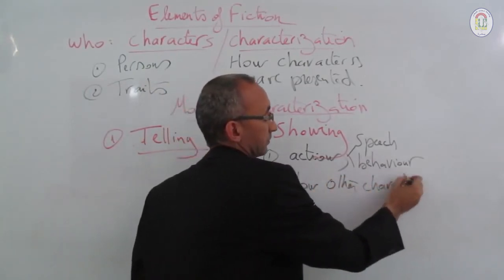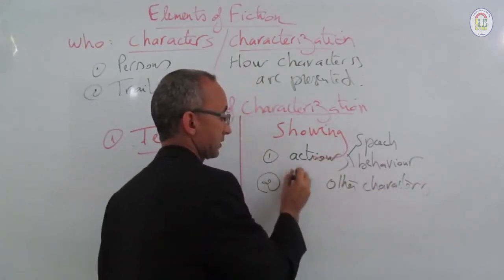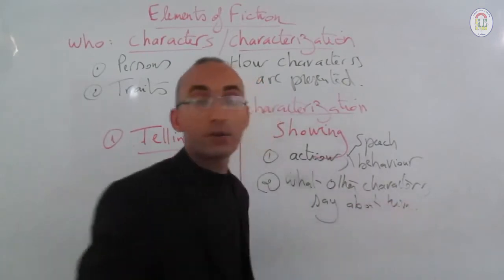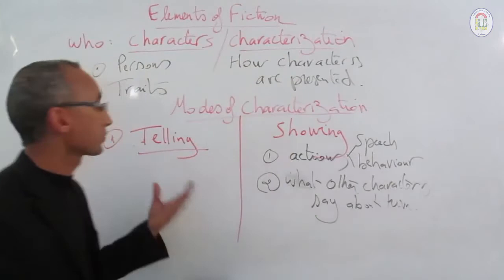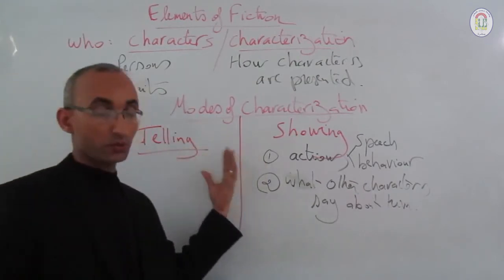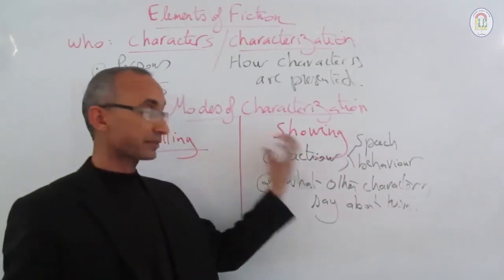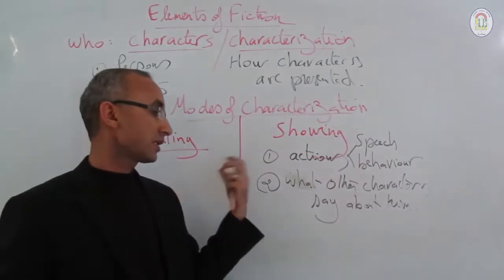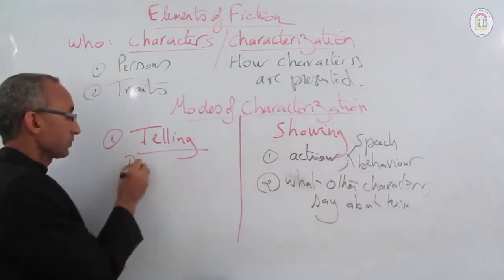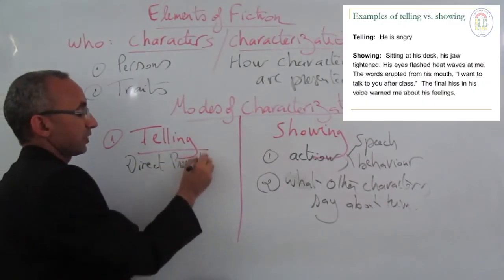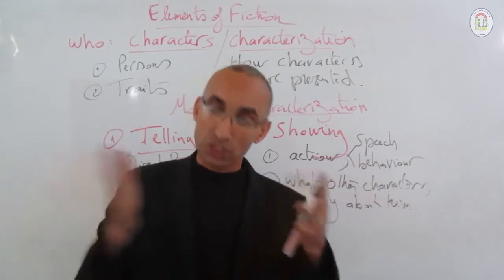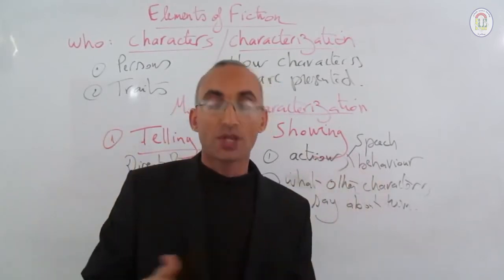Showing also includes what other characters say about him. These are the two modes of characterization: direct presentation through the narrator's depiction, and indirect or dramatic presentation through the character's actions, speech, or behavior, as well as through what other characters say about him.